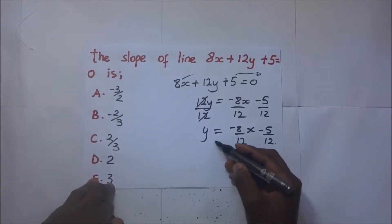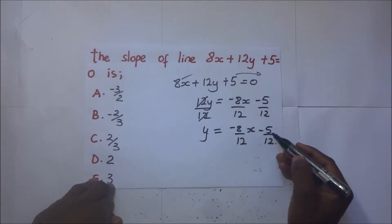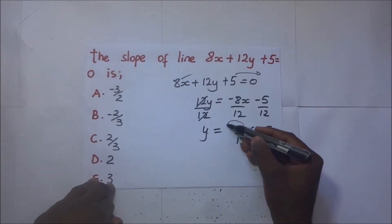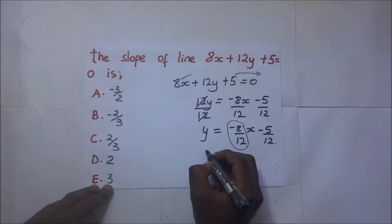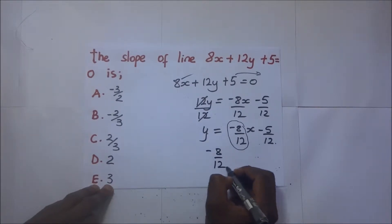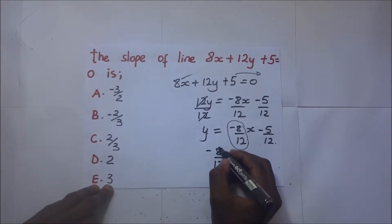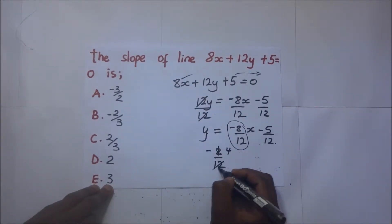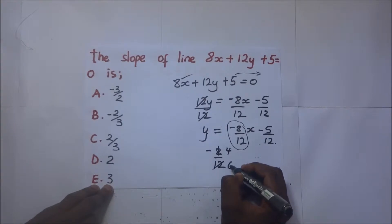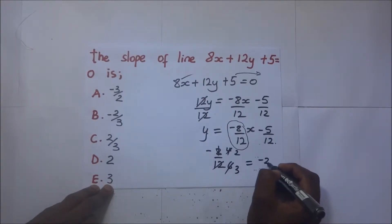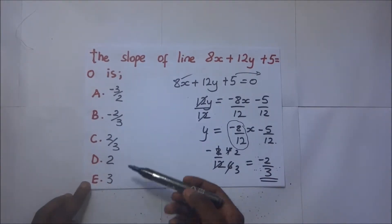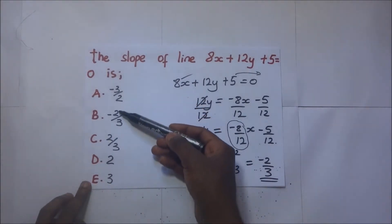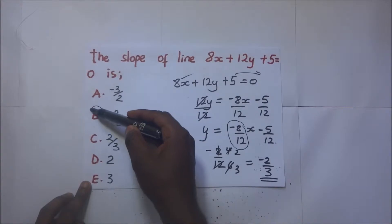This is now in the form y = mx + c, so the gradient is negative 8 over 12. Simplifying by dividing numerator and denominator by 4 gives negative 2 over 3. So the answer is negative 2 over 3, which is option B.